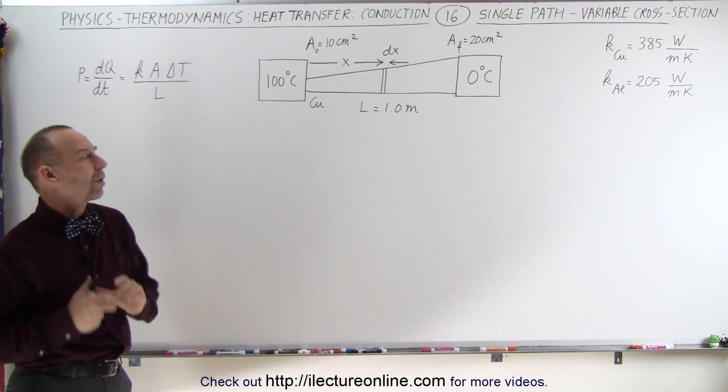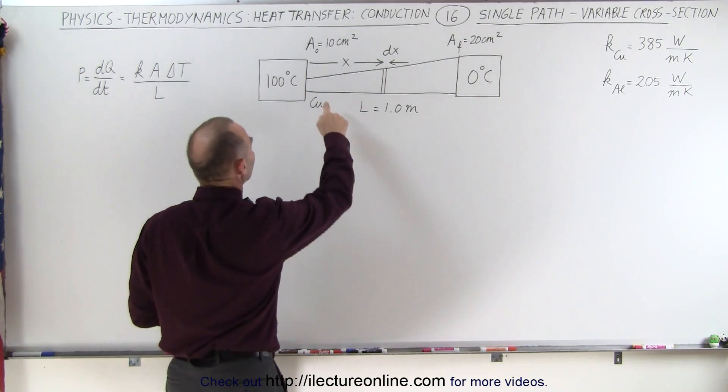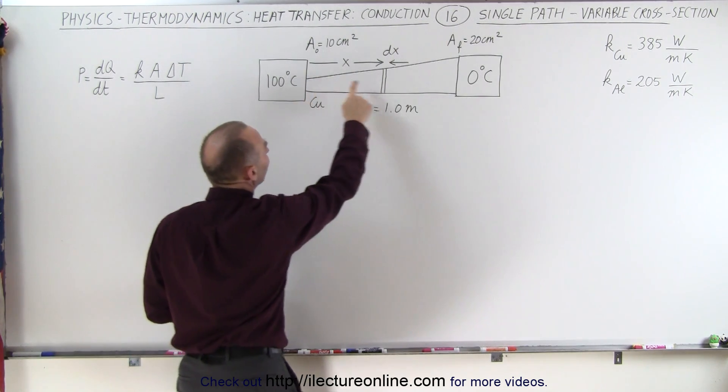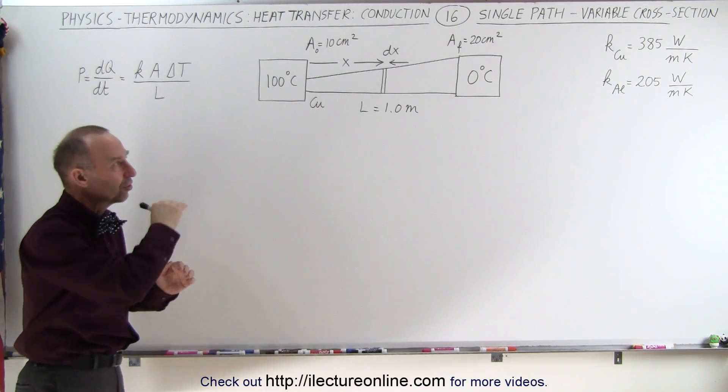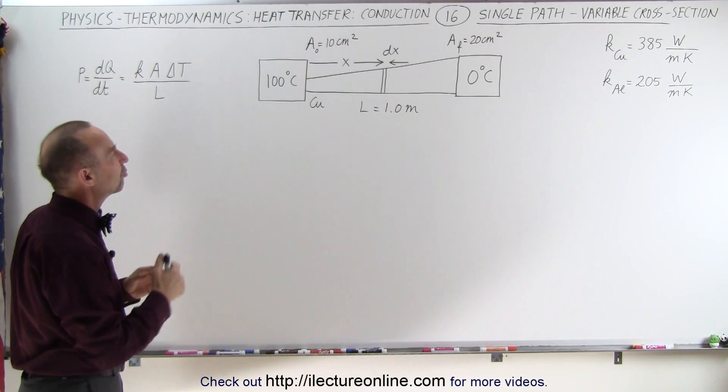In this video, we're going to change the cross-sectional area. It's going to start at 10 square centimeters on one end, and have it to be 20 square centimeters on the other end, and there's the linear change from one end to the other.